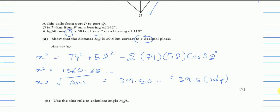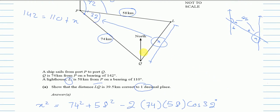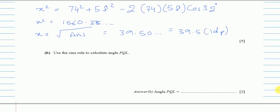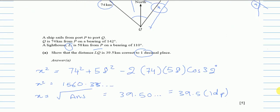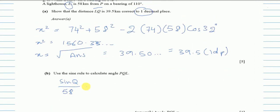Part B: use the sine rule to calculate angle PQL. We need to find this angle at Q. We know one side opposite a known angle, and another side, so we set up: sin(Q) / 58 = sin(32°) / 39.5.